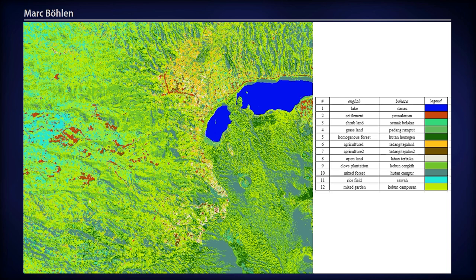The best results we generated are in fact also visually convincing. This support vector machine classification clearly depicts, for example, the famous Balinese rice paddies and the extent of settlement activity in the area.